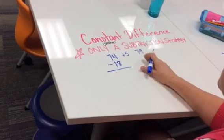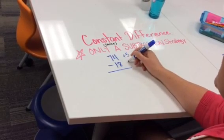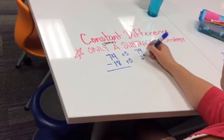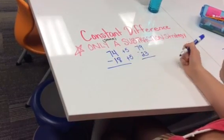So I have my larger number on top. If I add 5 to the top, I need to add 5 to my other number. 18 plus 5 equals 23, and then I'm going to subtract.